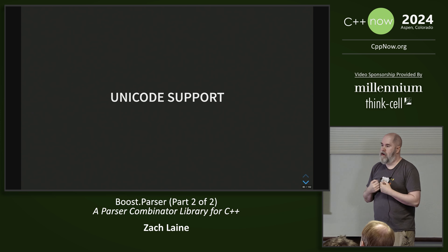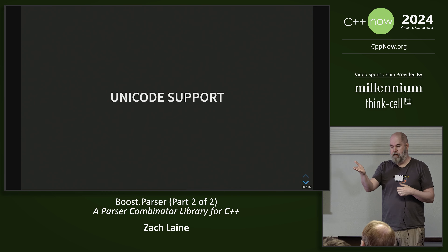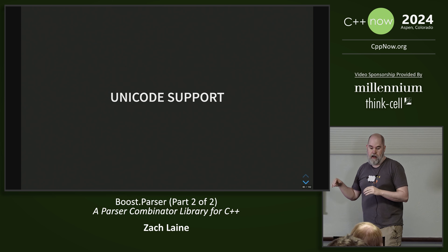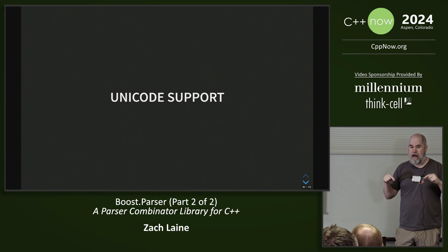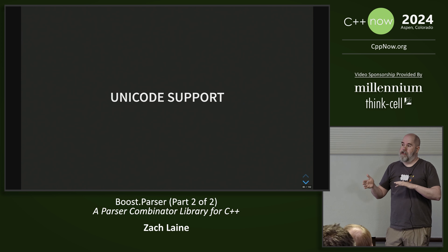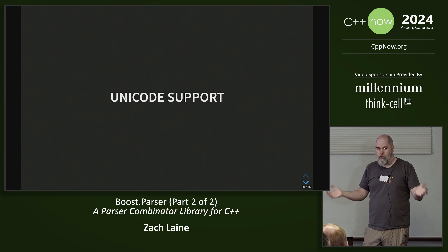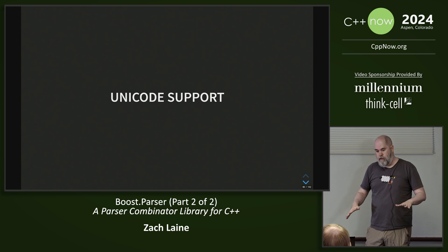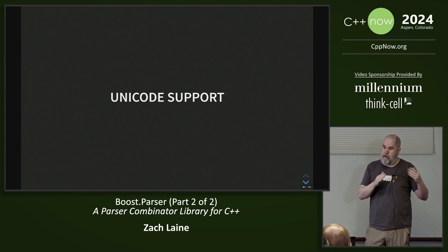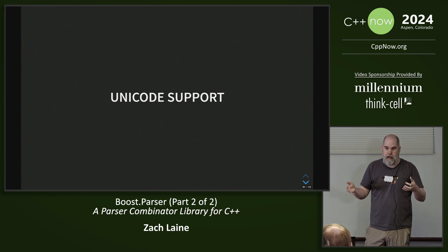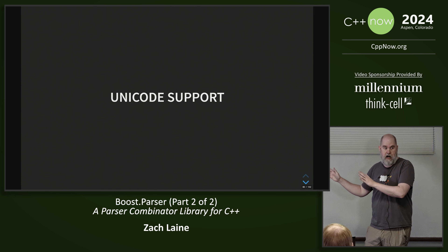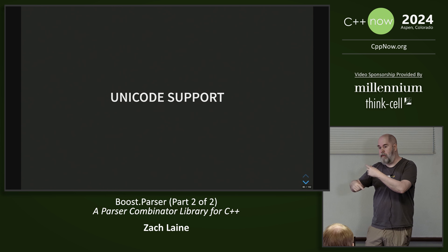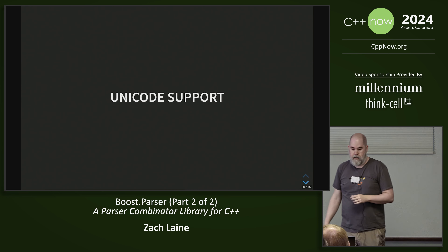Now let's talk about Unicode support. I should say up front that I wrote a Unicode library and I wanted to bring that knowledge to bear on this library, because Spirit 2 and X3 both have Unicode support but it's bolted on. I wanted to make sure everything was Unicode friendly all the time, but you still don't pay for what you don't use. If you want to do ASCII parsing, you just do ASCII parsing. If you want Unicode, you just do Unicode — you don't have to configure anything. You just feed stuff that looks like Unicode into the parser and now you're in Unicode land.